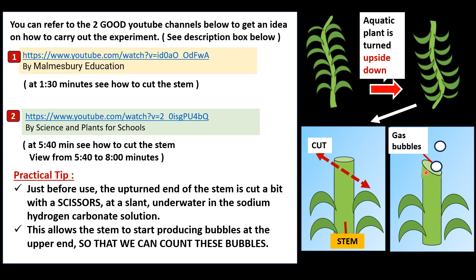This will allow the stem — cut in a slanted pattern — to start producing oxygen bubbles. The oxygen bubbles travel through the vessels inside the plant and come up at the end. You can see tiny bubbles start being formed at this end, which is the top end now but is actually the bottom part of the plant. Then we can count how many gas bubbles or oxygen bubbles are released in five minutes, two minutes, or one minute, depending on the question.